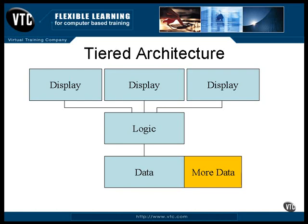There are plenty of reasons for using an n-tiered architecture, but the main one is maintenance. For example, when you need to add or change something, you can look at the architecture and you'll know where it should go.